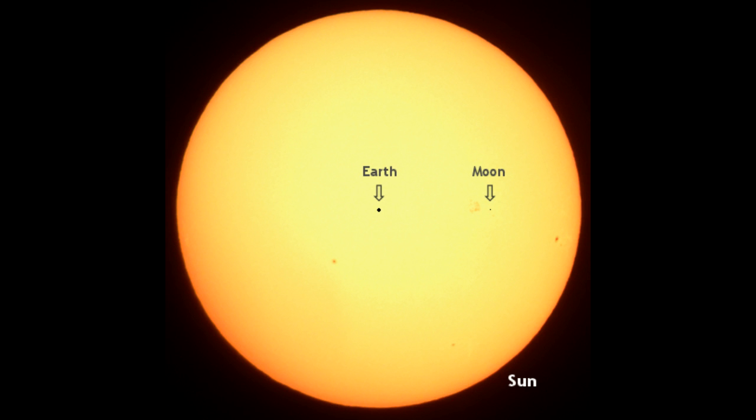And just for a little more scale, there's the sun, and the Earth is in the center, and the moon is on the right. So you'd be able to fit every planet in between the Earth and the moon, and you can see how ginormous the sun actually is.